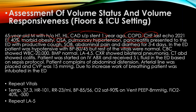In the ED, the patient was hypotensive with blood pressure 80 over 45. Initial CBC showed elevated white cells, BMP was normal, lactic acid was high at 4.5, and chest x-ray showed bilateral pneumonia. CT of the abdomen showed colitis. The patient was started on IV fluid and IV antibiotics and received 5 liters of fluid in the ED based on sepsis protocol.